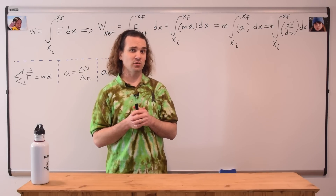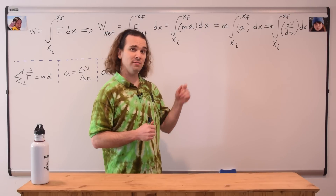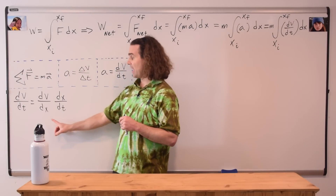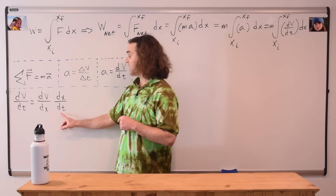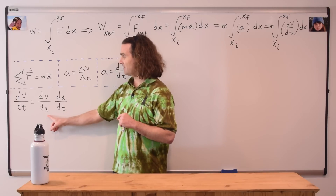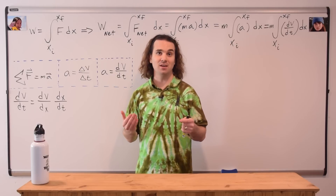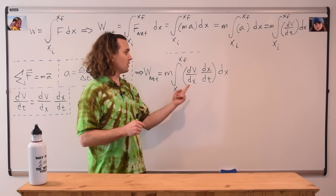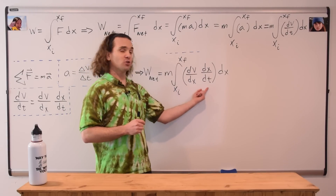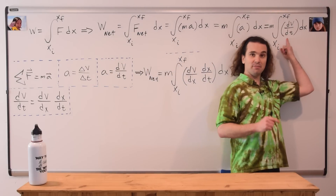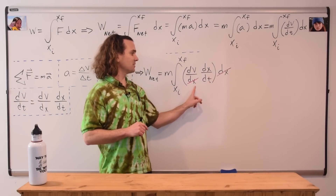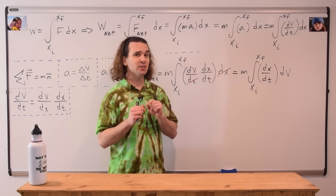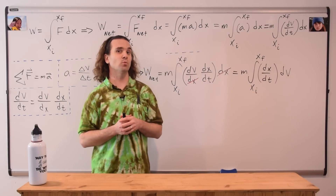However, we are still unable to take the integral. So let's take a closer look at this derivative of velocity with respect to time. The derivative of velocity with respect to time is the same thing as the derivative of velocity with respect to position times the derivative of position with respect to time. Notice how the dx's cancel out and we're left with the derivative of velocity with respect to time. Therefore, we can substitute in (dv/dx)(dx/dt) in for dv/dt. Now, these two dx's cancel one another out and we are left with net work equals mass times the integral with respect to velocity of the derivative of position with respect to time.